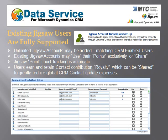Existing Jigsaw accounts may use their points exclusively or be shared across all CRM users for enterprise benefits. The standard Jigsaw point system count tracking is automatic in Data Service. Users earn and retain a contact contribution royalty, which can be shared, to greatly reduce global CRM contact update expenses. Once you buy a contact, you do not need to pay again to keep it updated.